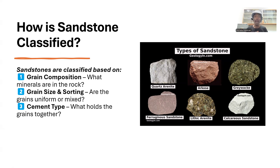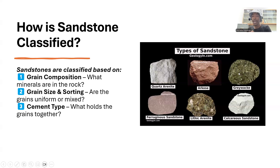Sandstones can be classified according to composition, grain size, sorting, and cement type. The different types include quartz arenite, containing at least 90 percent quartz; arkosic sandstone containing feldspar; ferrogenous sandstone with iron materials; lithic sandstones; calcareous sandstones containing calcium carbonates; and wacke, containing more than 15 percent clay matrix.